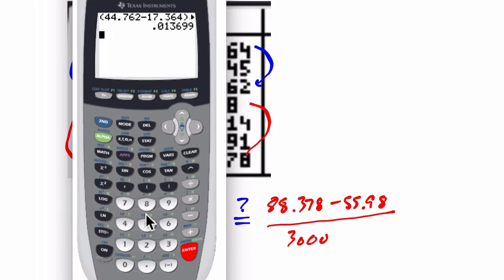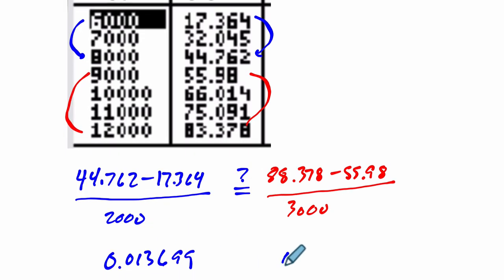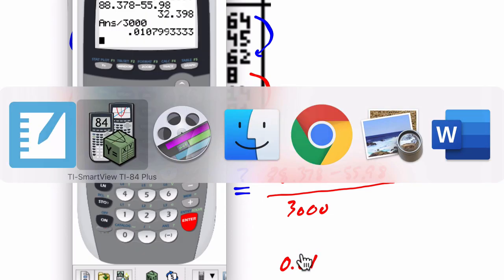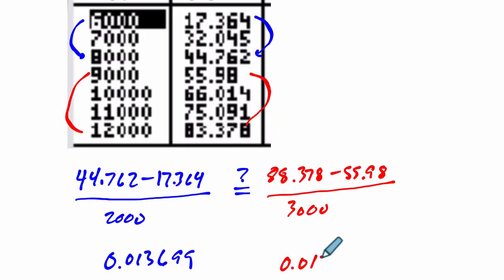And then in the other case, we have 88.378 minus 55.98. And I forgot my parentheses, so I don't want to just put divide by 3,000. That'll mess up my order of operations. I would only divide 55.98 by 3,000. So instead, I hit enter. That gets me this difference. And then I divide that by 3,000. And that gives me 0.010799. So let's write that down. Use red. 0.010799. And this number is smaller than this one.